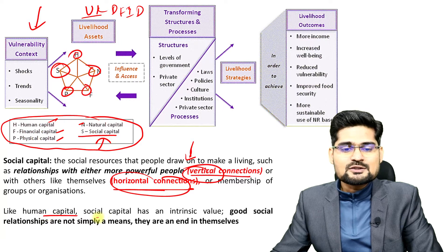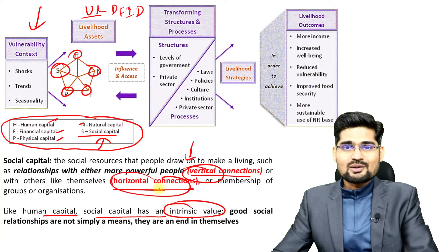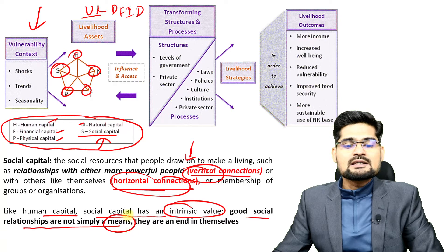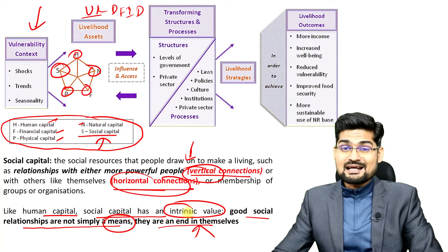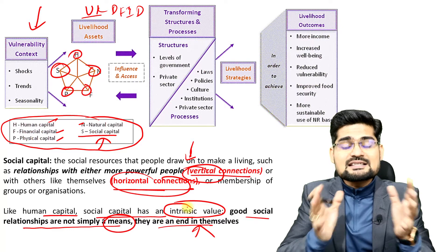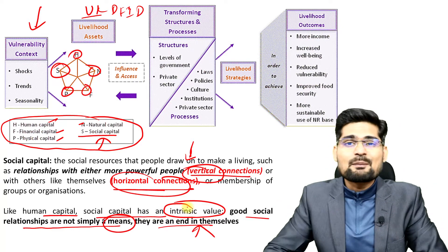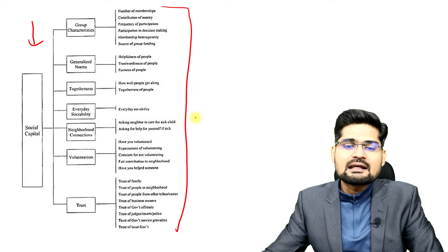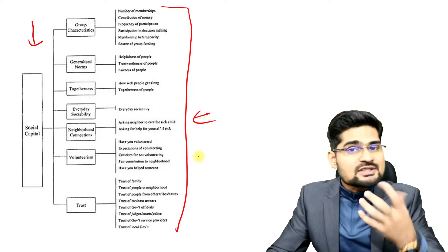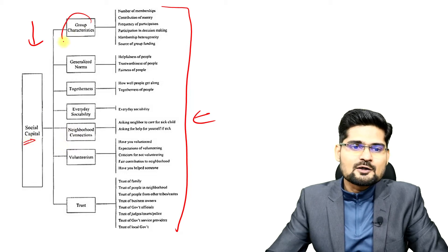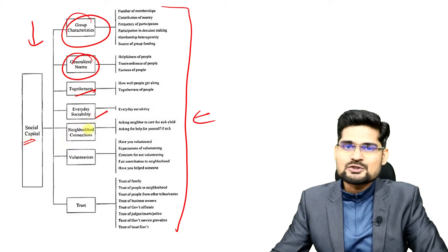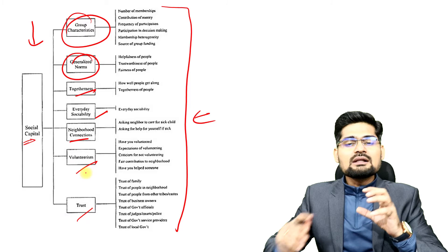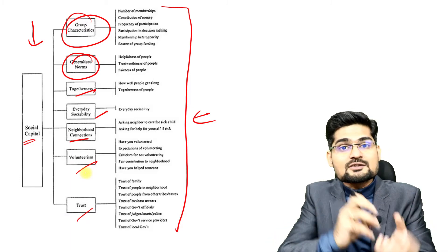Like human capital, social capital has an intrinsic value — not external but internal, an engraved value. Good social capital and good social relationships are an end in themselves; they are complete in themselves. For sustainable livelihood, social capital becomes really important. This flow diagram gives us various kinds of indicators — how in simple actions we can understand what social capital is. Social capital has group characteristics: generalized norms, togetherness, everyday sociability, neighborhood characteristics, voluntarism, and trust. All these things are very important for a society to make it a social capital.